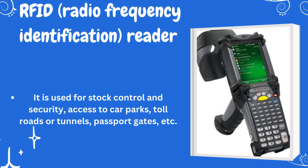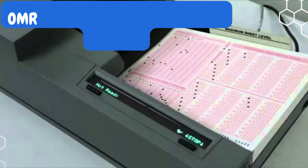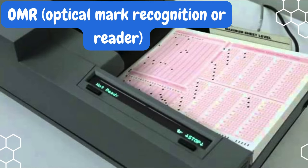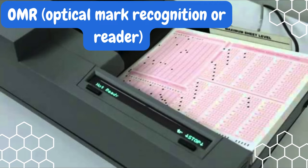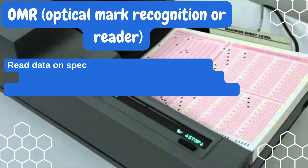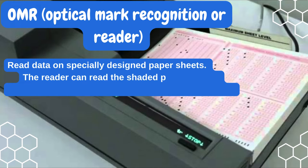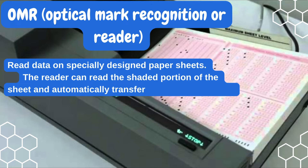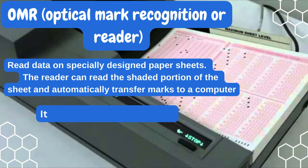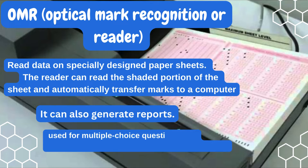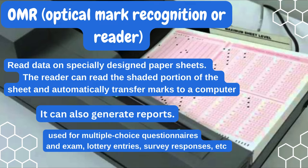Four: OMR — optical mark recognition or reader. This is used to read data on specially designed paper sheets. The reader can read the shaded portion of the sheet and automatically transfer marks to a computer. It can also generate reports. It is used for multiple choice questionnaires and exams, lottery entries, survey responses, etc.